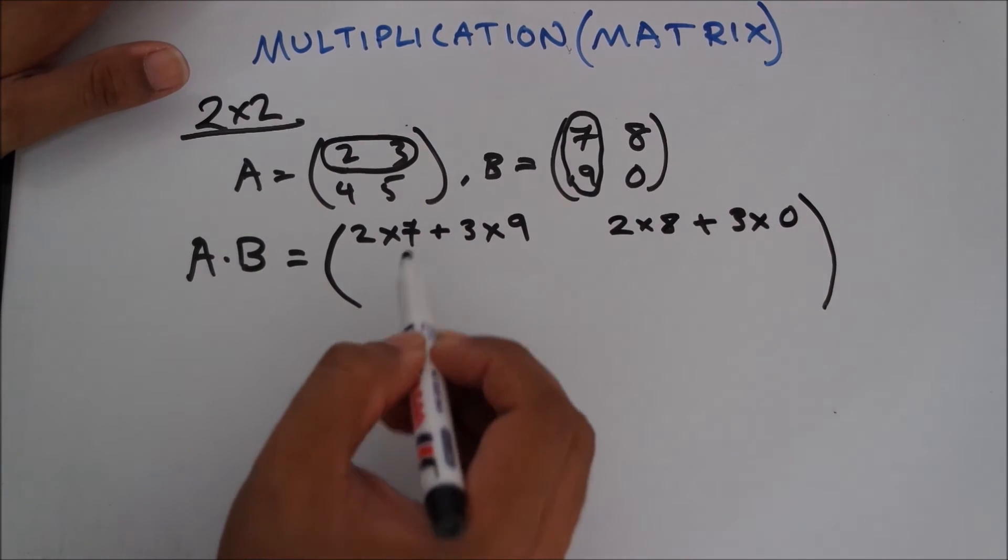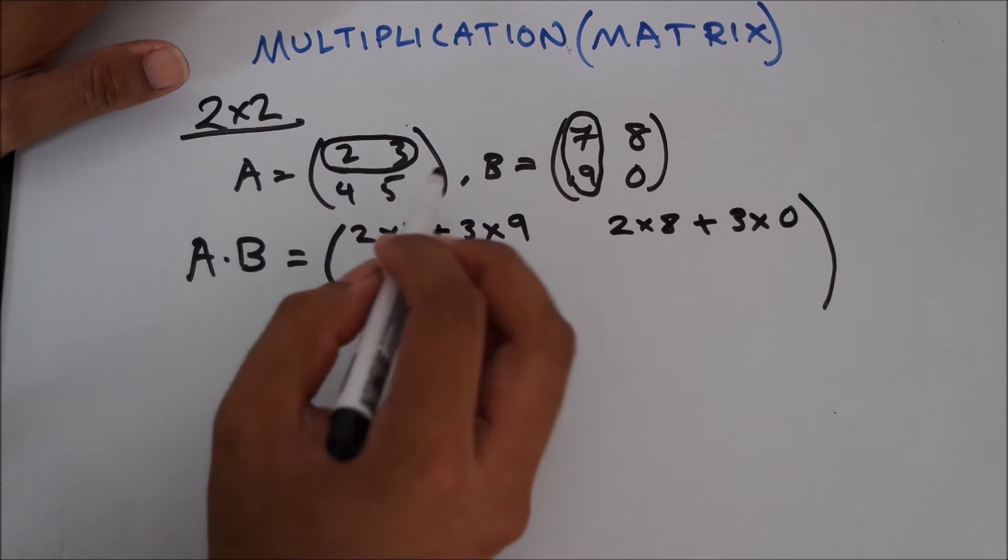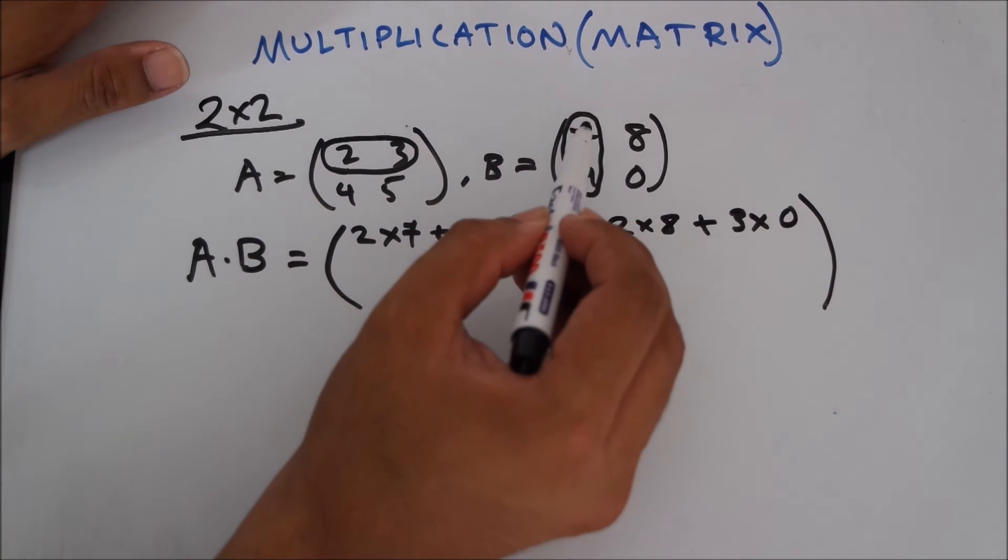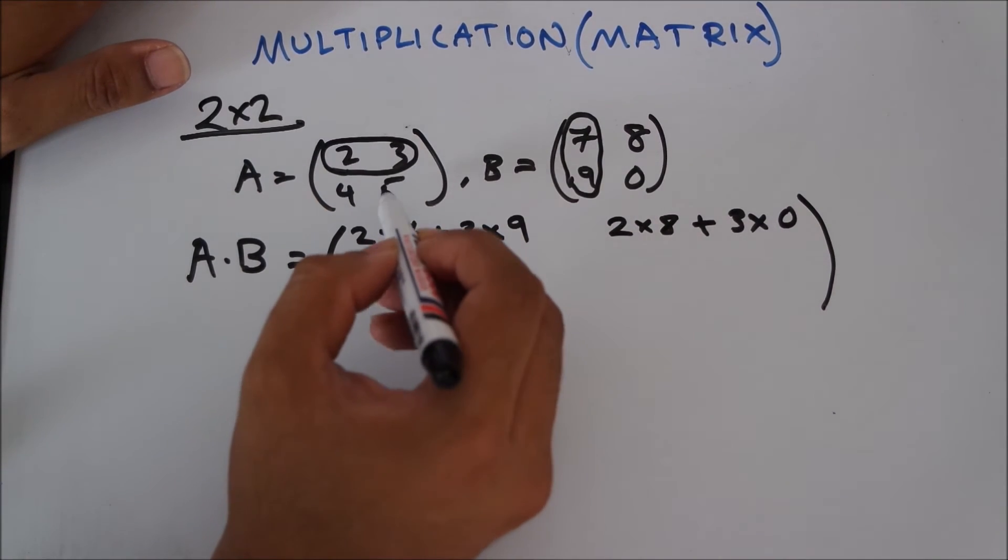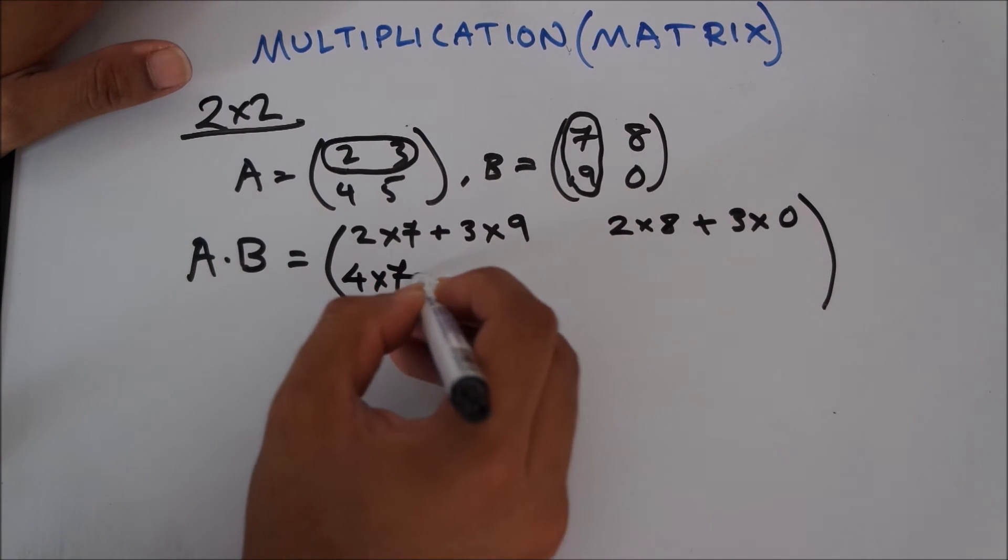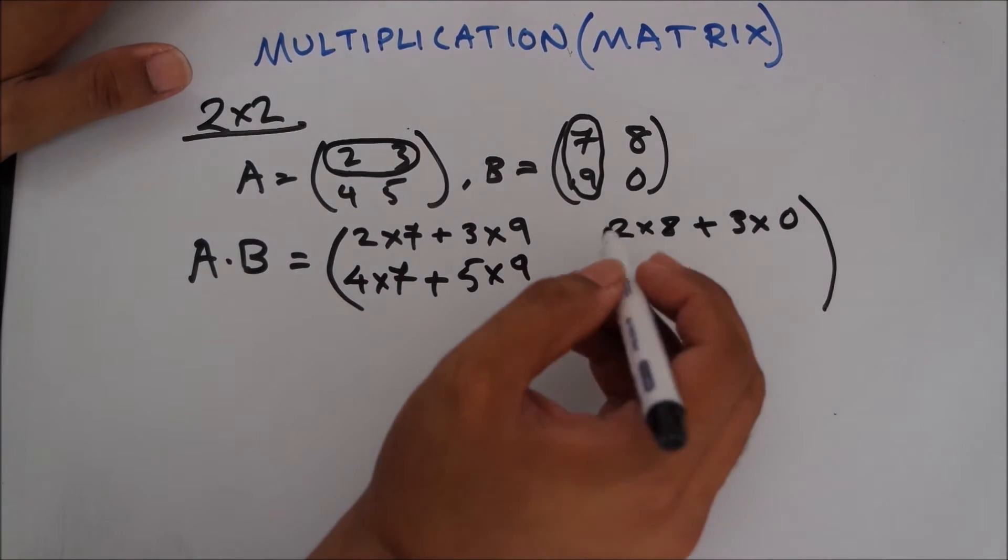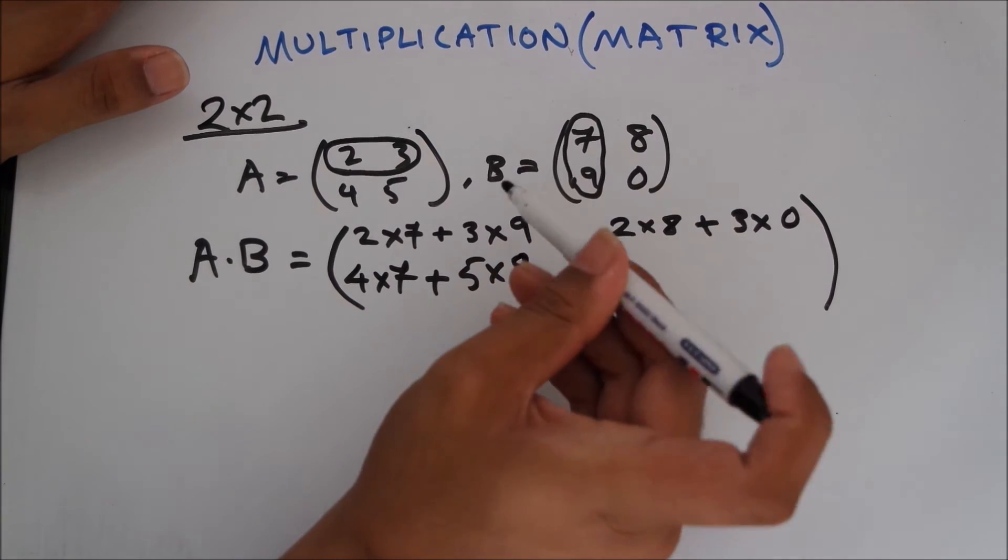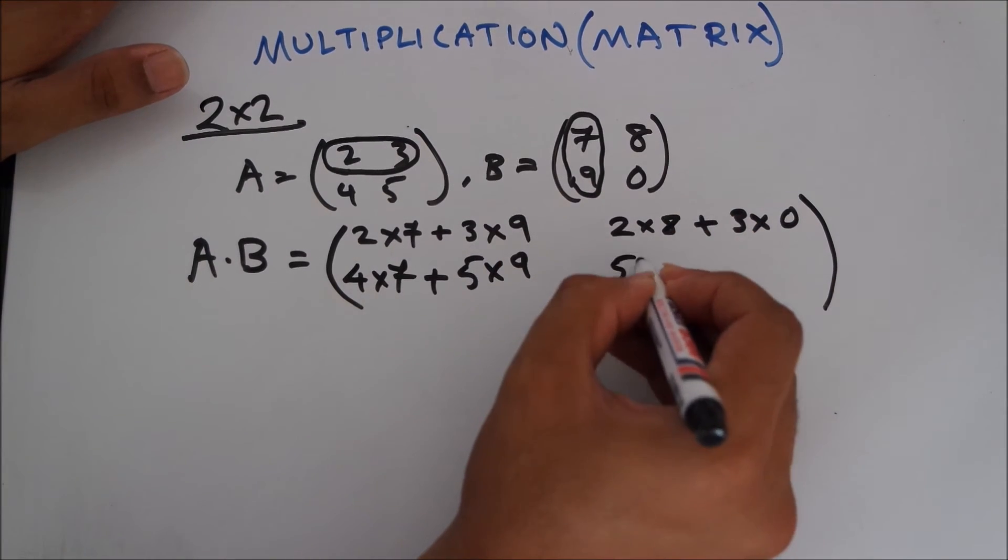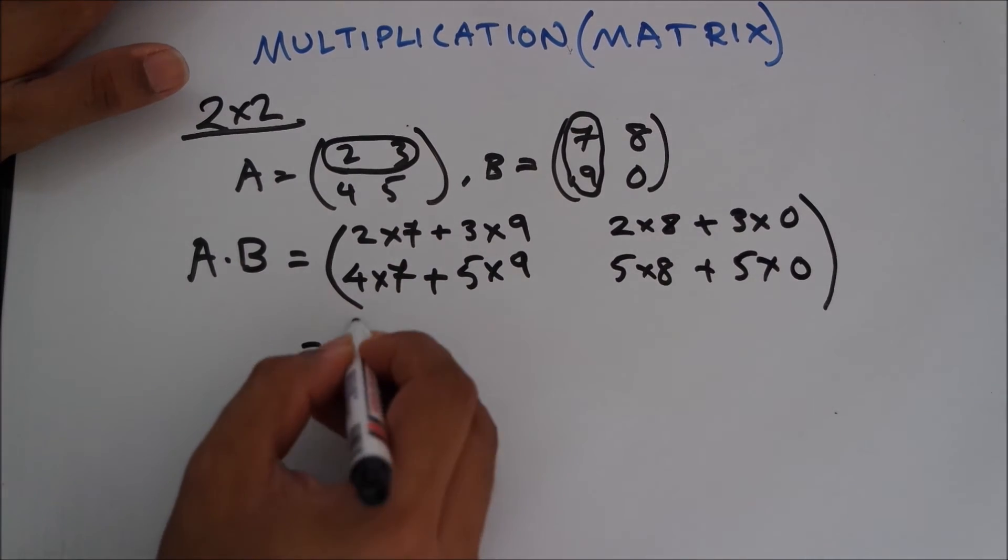Now we go on to the second row. You take 4 and multiply it with 7, and then add 5 into 9. 4 into 7 plus 5 into 9. I think you have figured it out already. So the next one would be 4 into 8 plus 5 into 0.